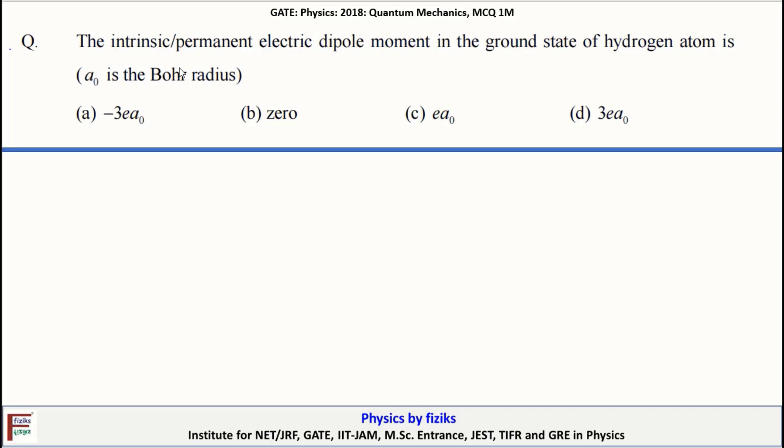The intrinsic permanent electric dipole moment in the ground state of hydrogen atom is always zero. So the intrinsic electric dipole moment in the ground state of hydrogen atom is always zero, and option B is the correct answer.